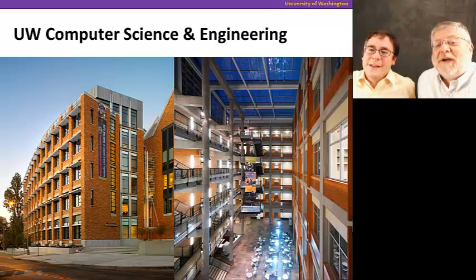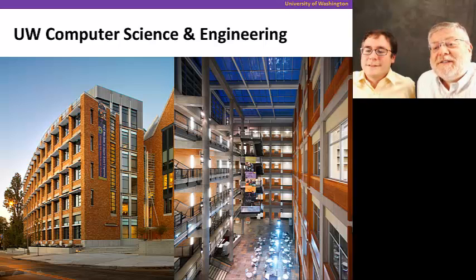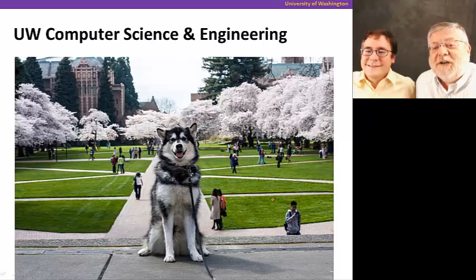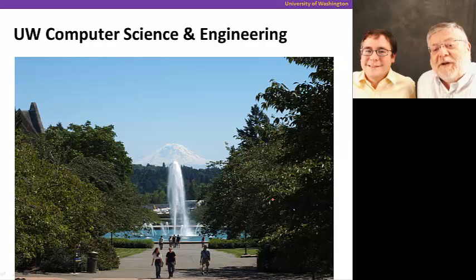We also wanted to show you where we work. That's the Paul G. Allen Center for Computer Science and Engineering at the University of Washington. It's a gorgeous building with a beautiful six-story high atrium. We are also known for the cherry blossoms on our campus, which just recently bloomed this March, and our mascot, the Husky. We're also known for Mount Rainier and some of the gorgeous mountain views around campus.